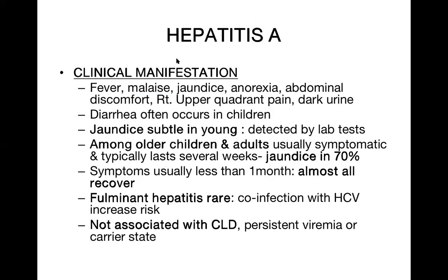Diarrhea often occurs in children with hepatitis A. Jaundice is subtle in young babies and is only detected by lab test. Among older children and adults, they are usually symptomatic and symptoms typically last several weeks. Almost 70% of them develop jaundice. Symptoms may last about one month, after which almost all recover.